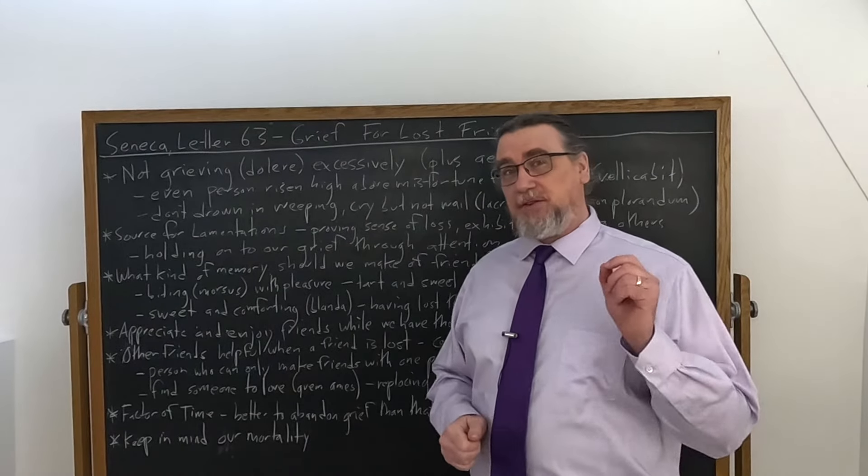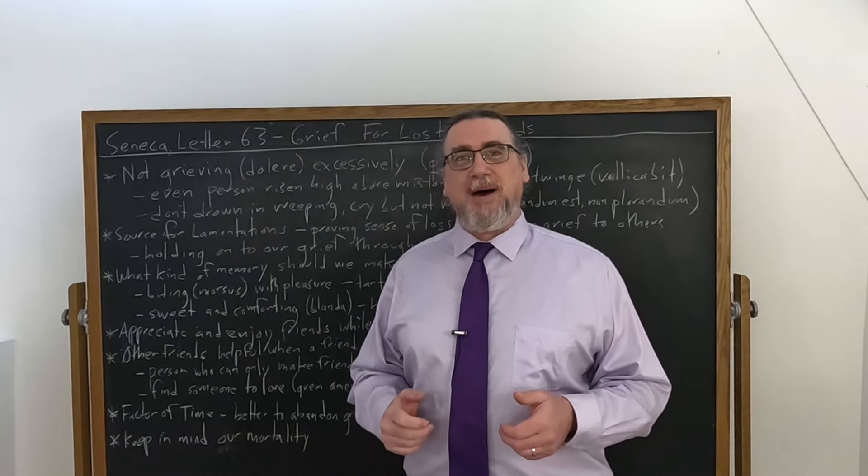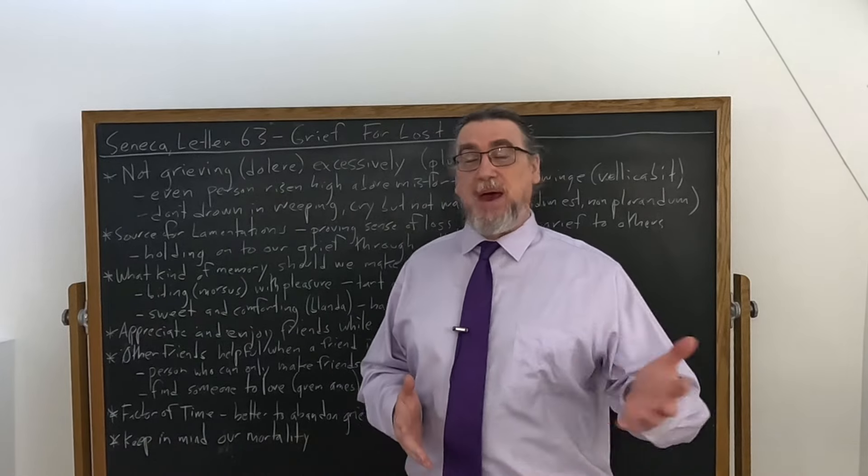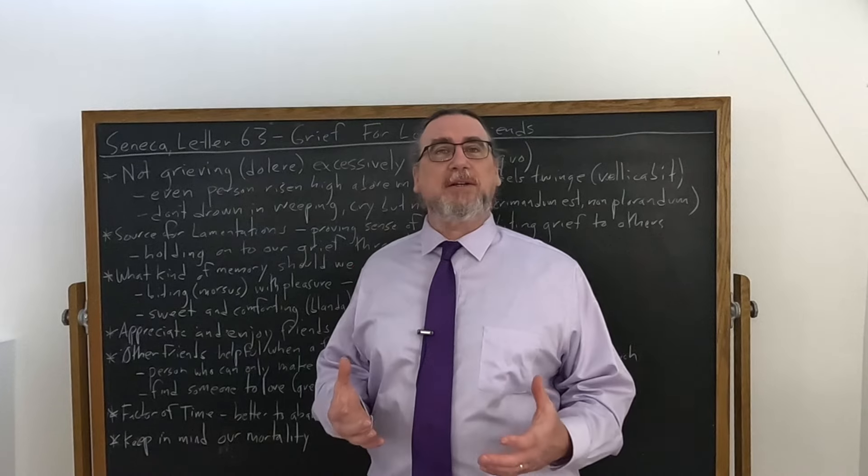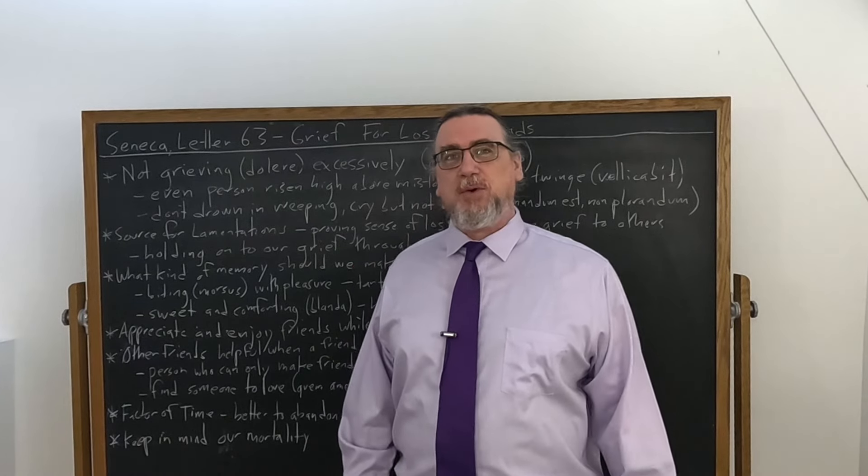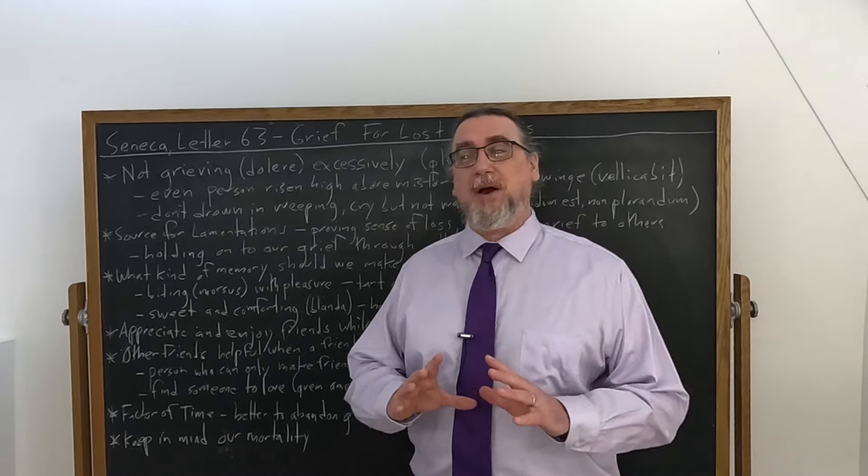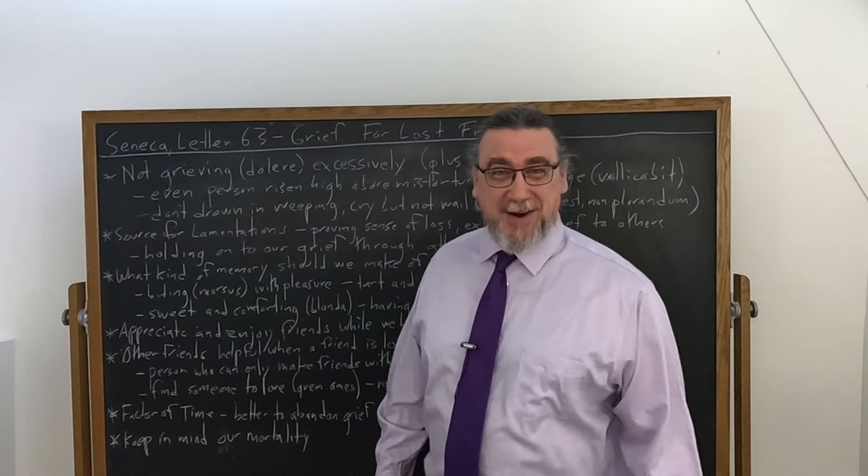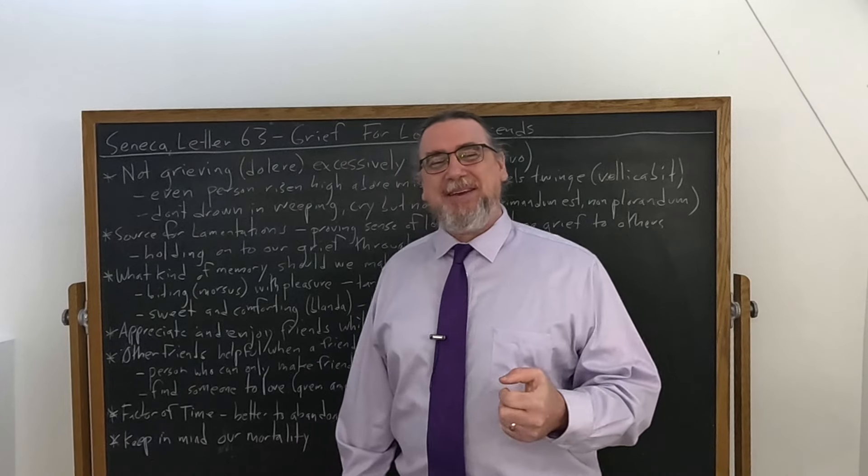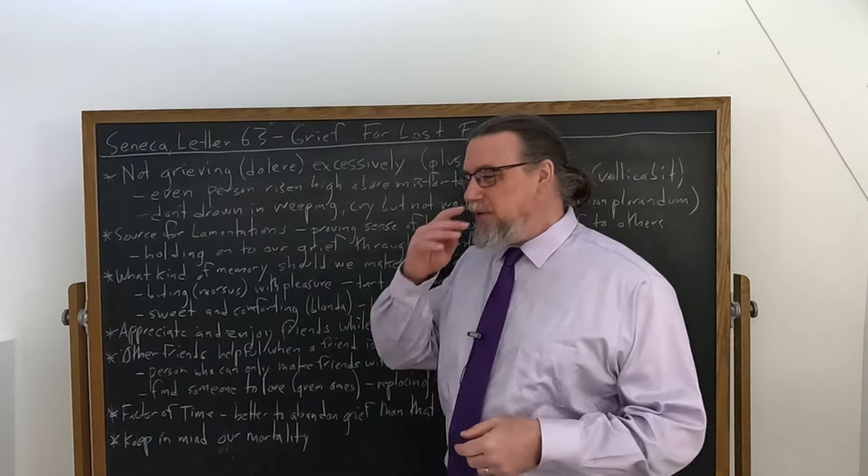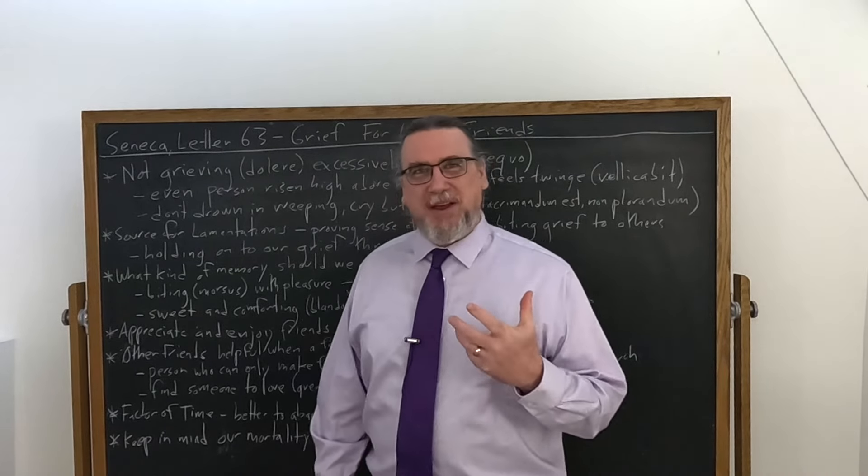In letter 63, Seneca is seemingly consoling his friend Lucilius on a common event back in Roman times and also unfortunately and inevitably in our own, the loss of a friend through death, which is bound to happen to all of us unless we're extraordinarily lucky and we die before all of our friends. But he's not just consoling him. He's actually providing him with some very useful and I think well-grounded, realistic advice.